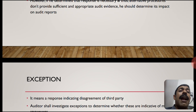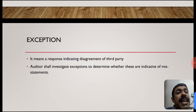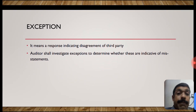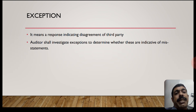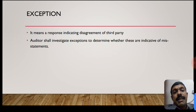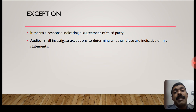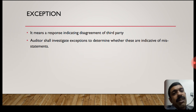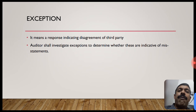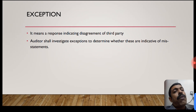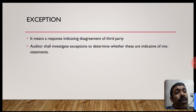If the auditor determines that a response is necessary and alternative audit procedures do not provide sufficient and appropriate audit evidence, the auditor should determine the impact on the audit report - this is a limitation of scope requiring modification under SA 705. An exception means a response indicating disagreement between the auditor's balance and the third party's balance. The auditor shall investigate the exceptions by reconciling with the client to find the reason for the variance. For bank confirmations, the auditor will directly collect confirmation from the bank for material balances. For legal confirmations, the auditor shall consult with legal counsel regarding any unfavorable cases, thus making contingent provisions.